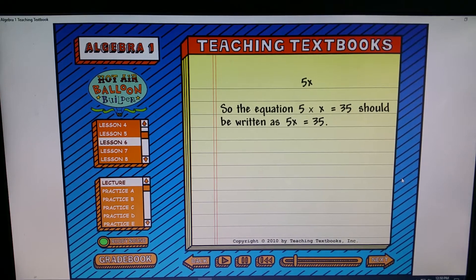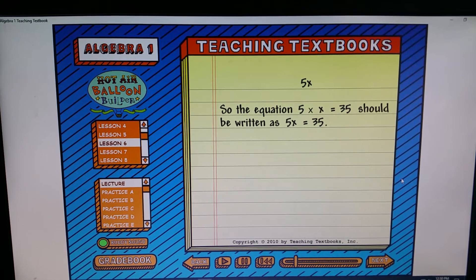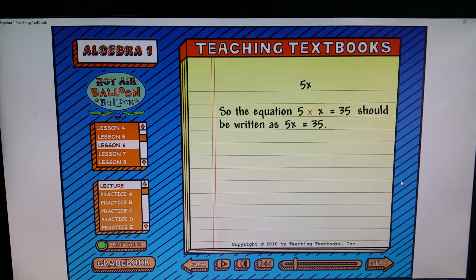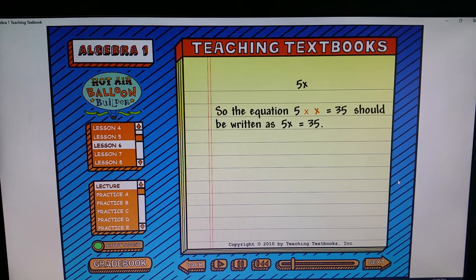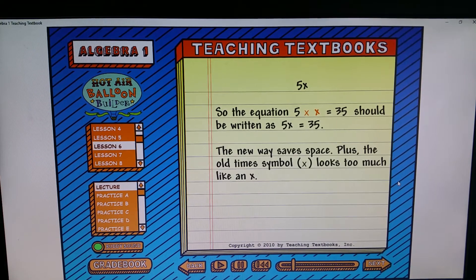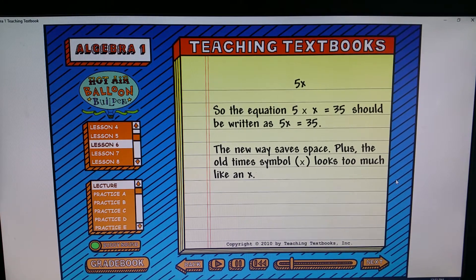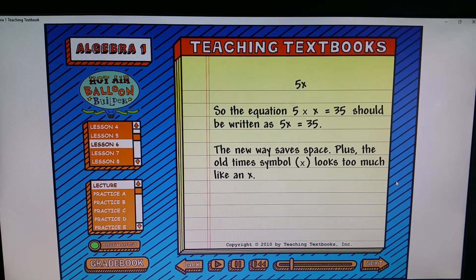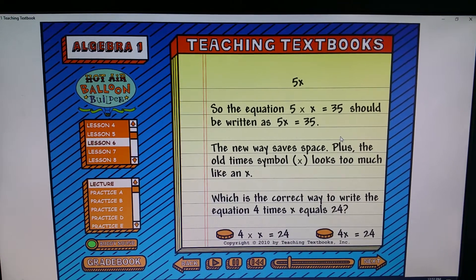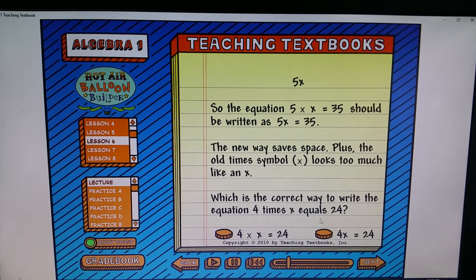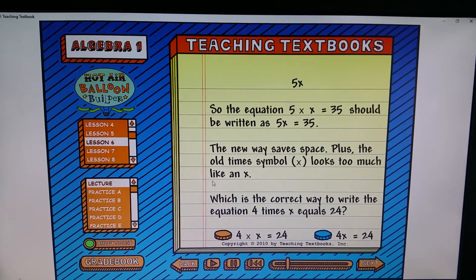But now let me ask you a question. Which is the correct way to write the equation four times X equals 24? See, and then it asks you a question. Then you have to figure it out. You're like, um, that's right, C. And it's kind of fun about writing a number multiplied by an X.